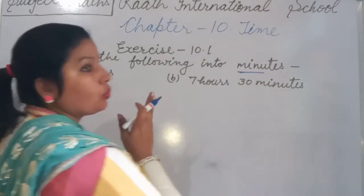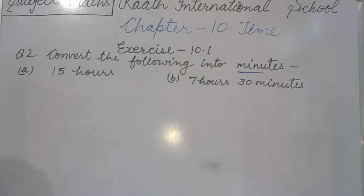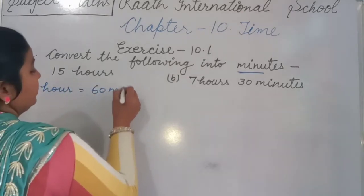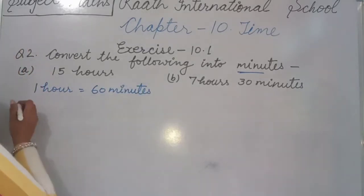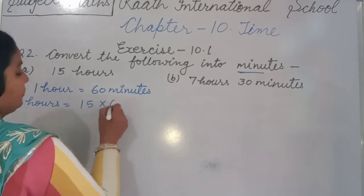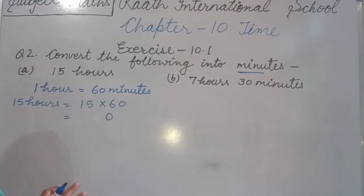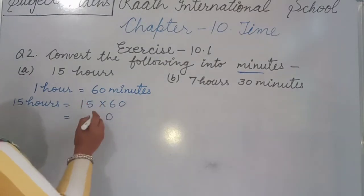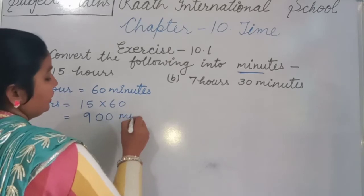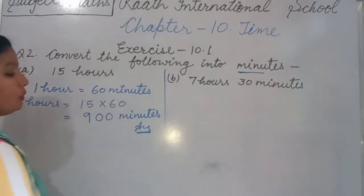Part A: Convert 15 hours into minutes. We know 1 hour equals 60 minutes. So 15 multiplied by 60: first write 0, then 15 multiplied by 6 — 6 fives are 30, carry 3; 6 ones are 6, plus 3 is 9. The answer is 900 minutes.